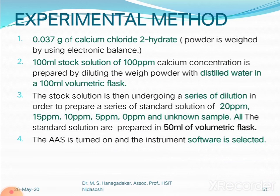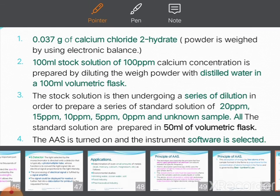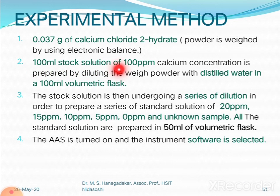Now let us discuss the experimental method for operating the atomic absorption spectrophotometer with a particular sample. Step one: 0.037 grams of calcium chloride dihydrate powder is weighed using an electronic balance. Step two: 100 ml of stock solution is prepared with a concentration of 100 ppm.